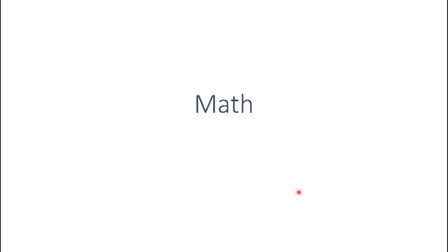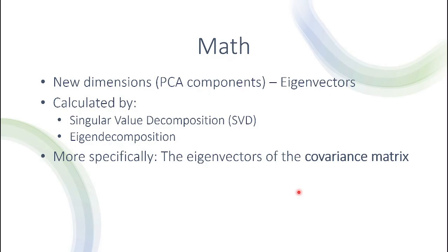Let's talk about the mathematical aspect of PCA. We want to project the data onto the eigenvectors — the new axes we saw earlier. The way we do that is by calculating the covariance matrix, and once we have that, we perform one of two methods: either singular value decomposition (SVD) or eigendecomposition. While they are two different methods with some similarities, in this specific case they converge to the same solution, giving us the exact same eigenvectors.